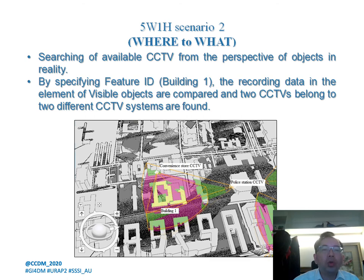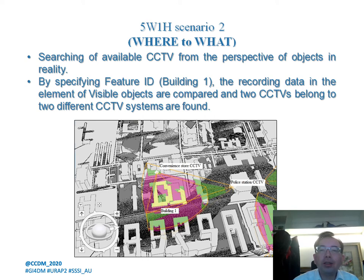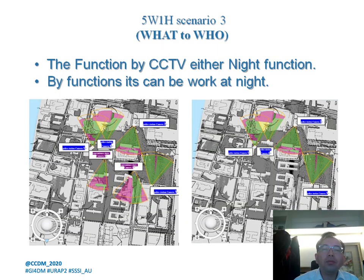In Scenario 2, by searching available CCTVs from the perspective of real-world objects — specifying a feature ID such as Building 1 — recording data in the visible object environment is compared, and two CCTVs belonging to two different CCTV systems are found. In Scenario 3 — what to who — the function of CCTV by either line function can be determined to be working or offline.